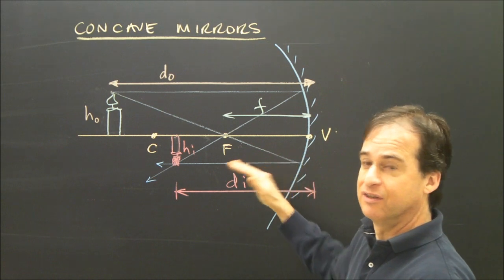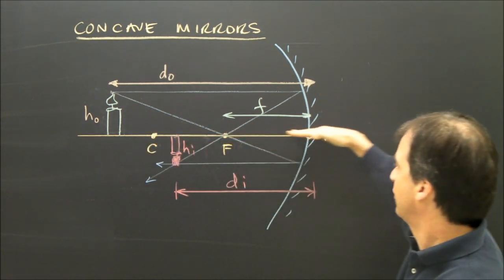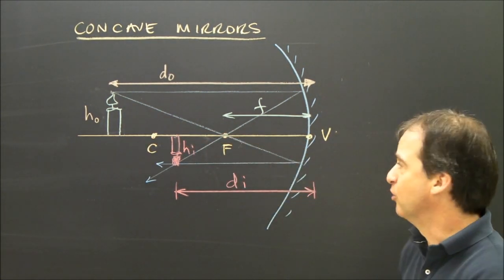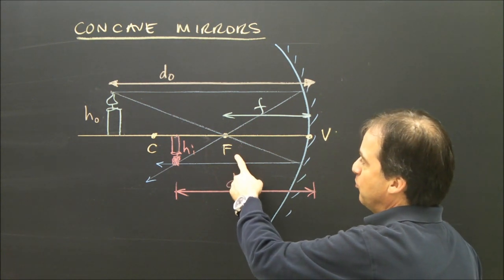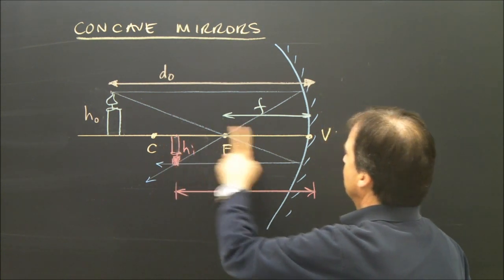This is a mirror. This is the axis, the center of the mirror. And you should already know some of these points: the focal point, the center of curvature, and the vertex.